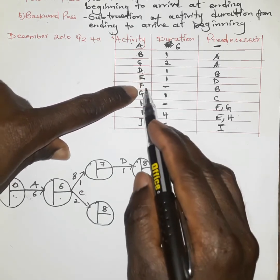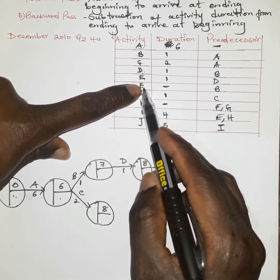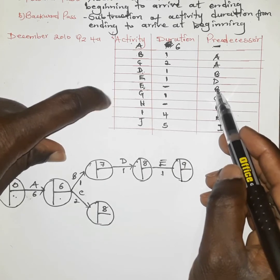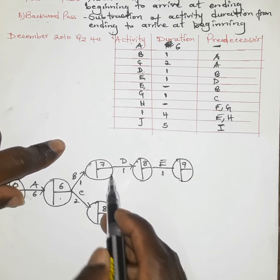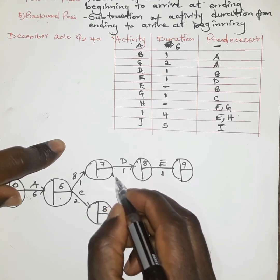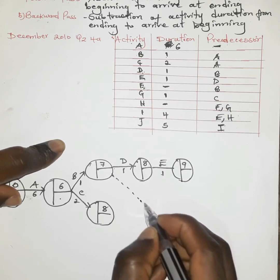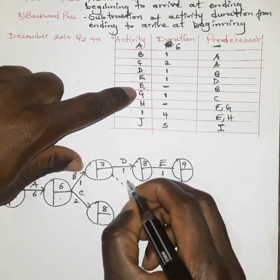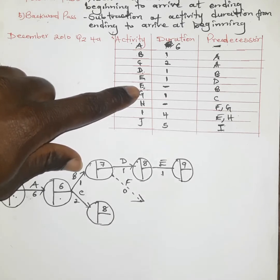We have activity F, which is a dummy activity. This dummy activity begins as soon as B is completed. We use dotted lines to illustrate that a particular activity is a dummy activity because it does not consume any resources. Activity F consumes zero time, and we indicate it that way.